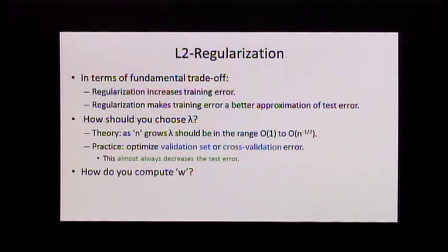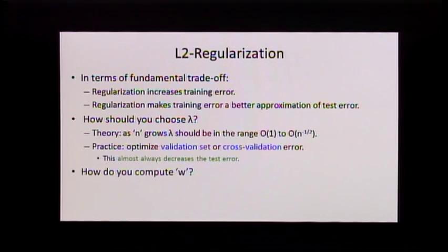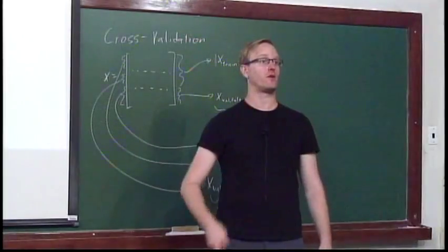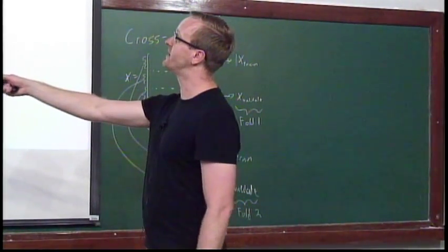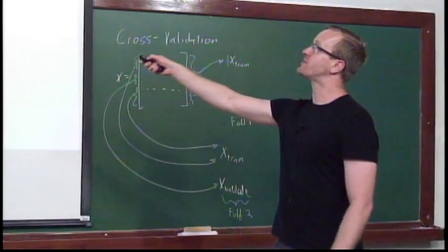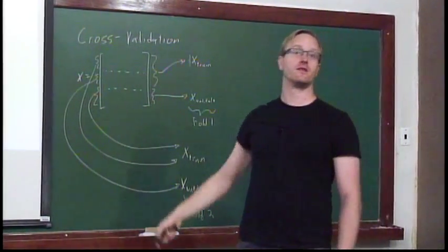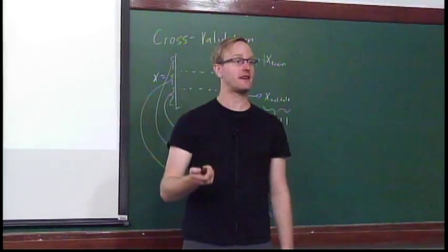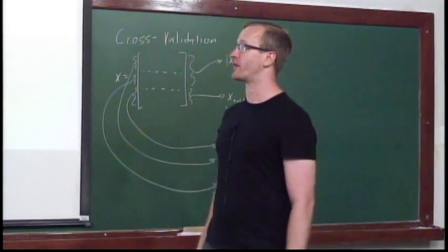In terms of that fundamental trade-off, regularization is going to increase the training error. You're putting a penalty on the optimization problem for having big values of W, so if there's a value of W that can get really low training error but W is big, it's not going to choose that. Your training error is just going to go up when you add regularization. But the hope is that it makes training error a much better approximation of test error. You're willing to have training error go up if it makes training error approximate test error better — that's the magic of regularization.